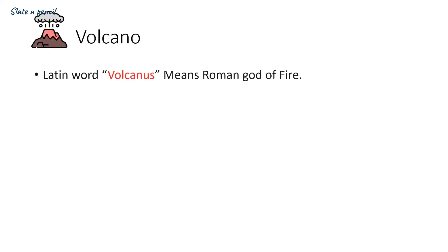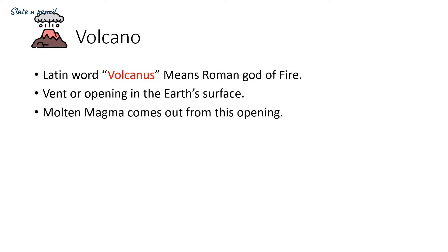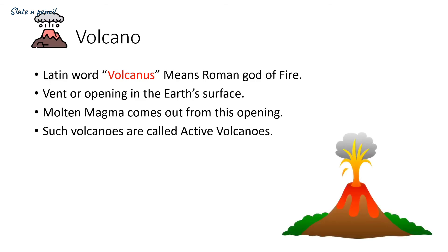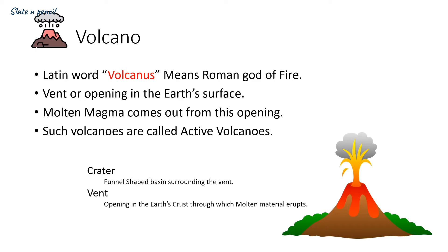Now we will discuss about volcanoes. 'Volcano' is a word derived from the Latin word 'Volcanus,' which means Roman god of fire. A volcano is a vent or opening in the Earth's surface that connects the mantle with the crust. Molten magma comes out from this opening, and once out it is called lava. Such volcanoes are called active volcanoes. In the diagram, we have two key terms: crater, which is a funnel-shaped basin surrounding the vent, and vent, which is the opening in the Earth's crust through which molten material erupts.